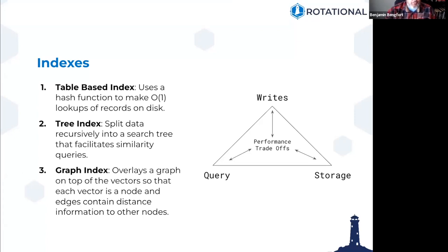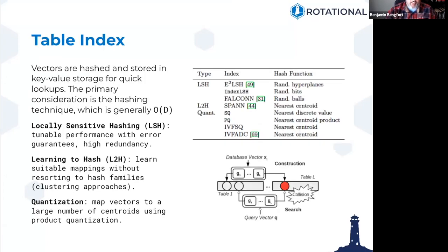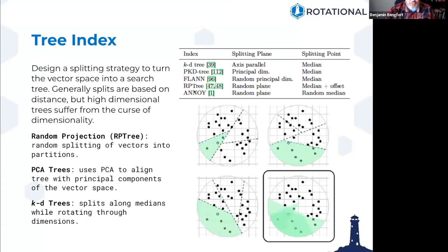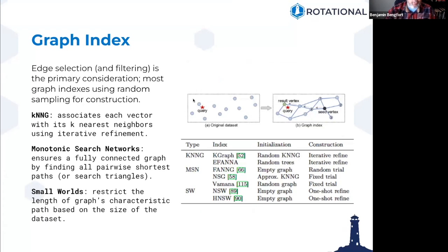I'm going to skip over the details of these index types, but they are in the slides. One of the reasons I wanted to include these acronyms — LSH, L2H, QUANT, KDTREE, RPTREE, HNSW — is because you're actually going to see them when configuring your databases in OpenSearch, Pinecone, and Chroma. They'll give you options for these things, so they're here in the slides for reference when you're trying to figure out what they are, what they're good for, and when to use them.